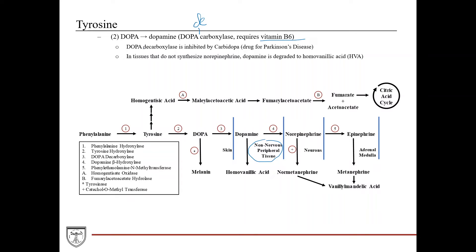DOPA decarboxylase is inhibited by the drug carbidopa, which is used to treat Parkinson's disease. If you're in non-nervous peripheral tissue, the pathway stops here. If you have excess dopamine, it gets converted into homovanillic acid.